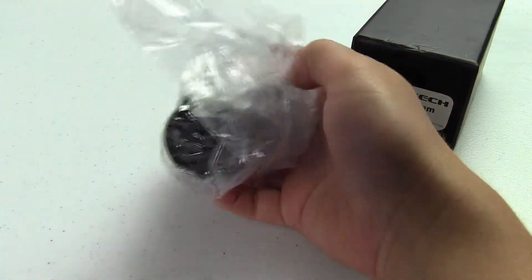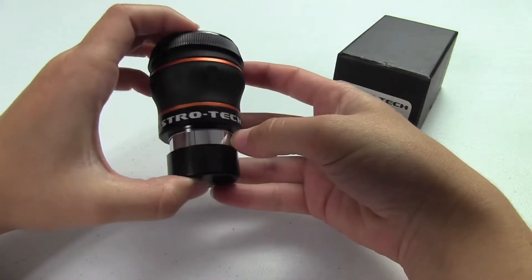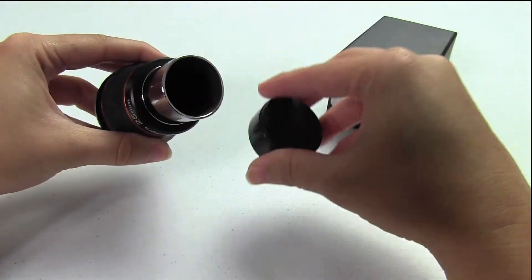It weighs in at 6.4 ounces, has an inch and a quarter barrel that is threaded for filters, and has a rubberized body so it helps against any sort of bumps and bruises that might come from putting it in and out of your eyepiece case.